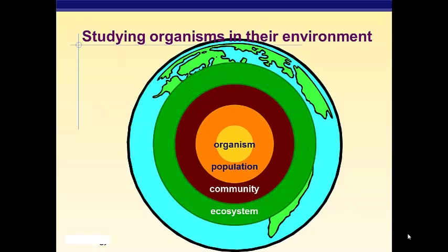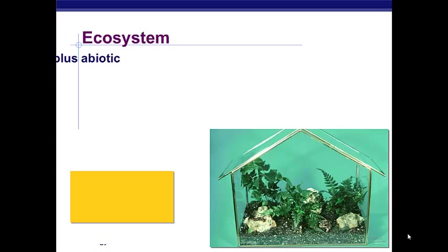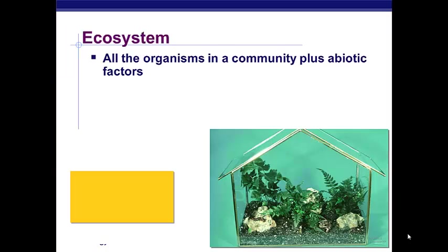Once you get up to ecosystem, you're dealing with the living things — the biotic factors — and the non-living things — the abiotic factors. So you not only have all of the turtles, fish, and birds living in a pond, but also the interaction of the water, the sunlight, the temperature — all of those abiotic factors as well. An ecosystem is all of the organisms in a community plus the abiotic factors that interact with them.